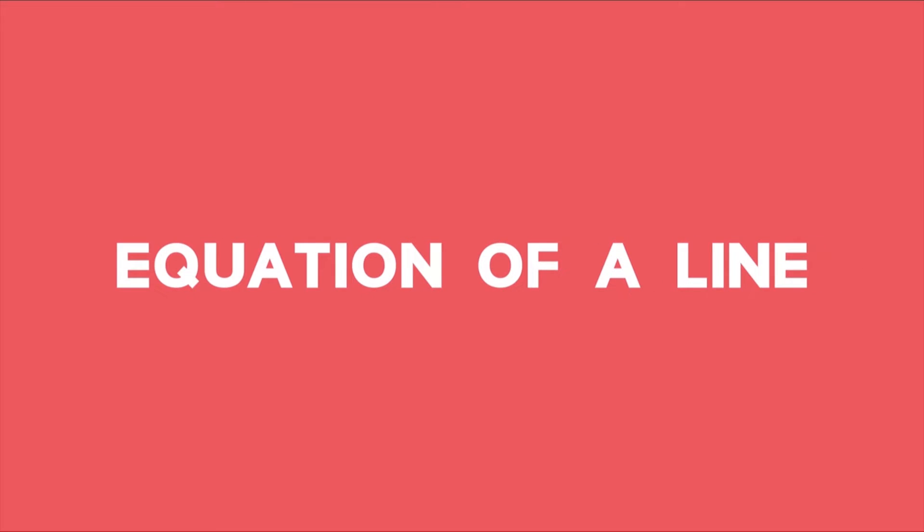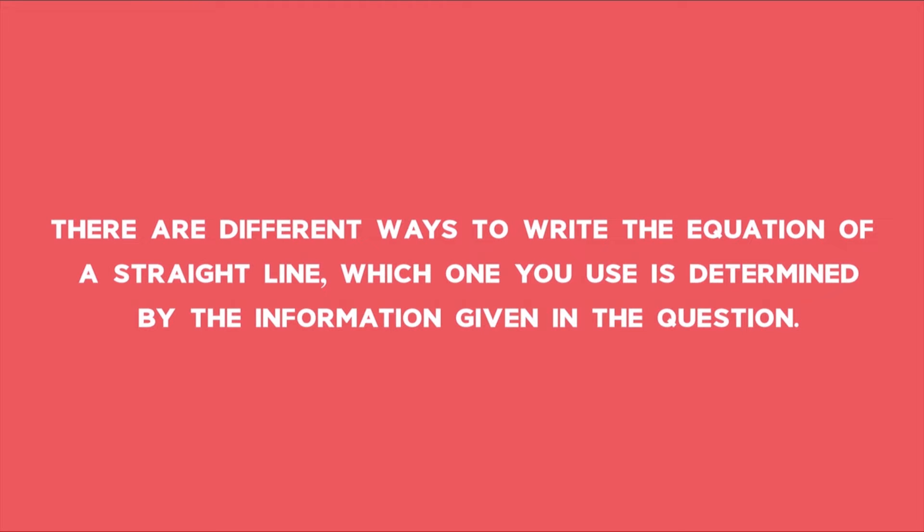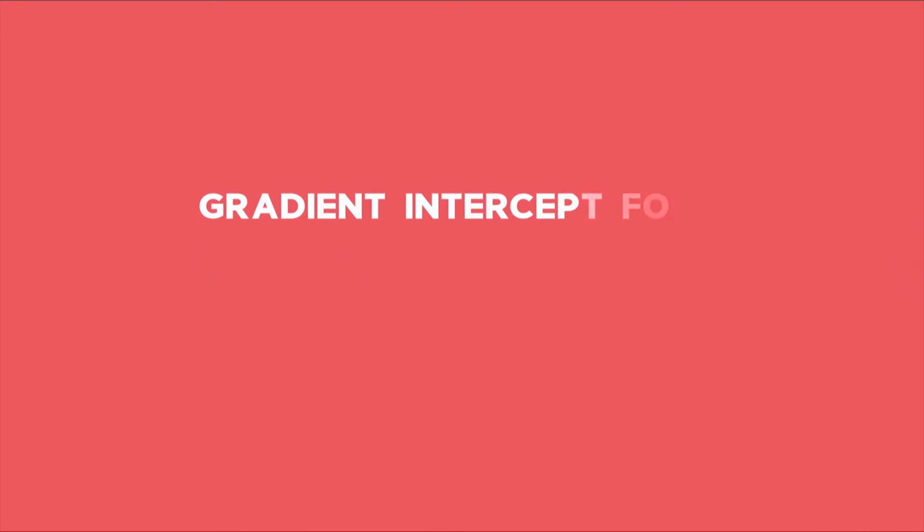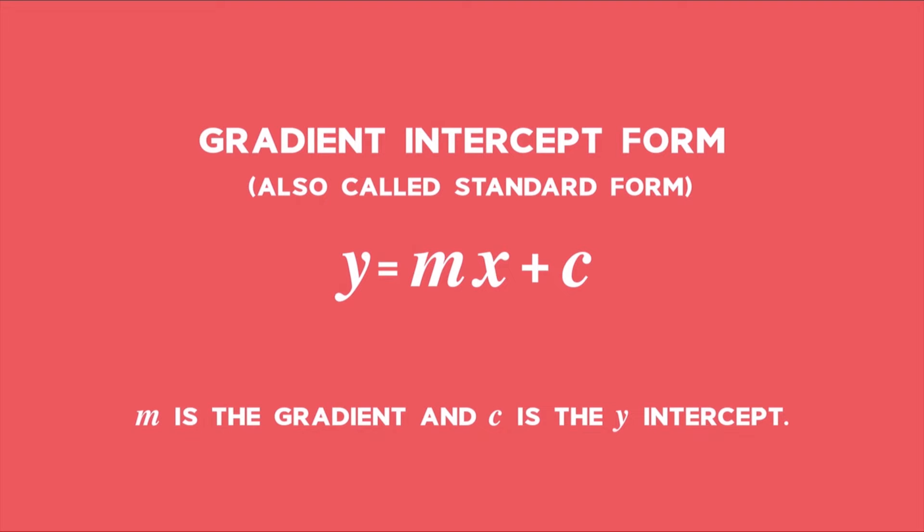The equation of a straight line. There are different ways to write the equation of a straight line. Which one you use is determined by the information given in the question. The first one is the gradient intercept form, also called the standard form of a straight line: y equals mx plus c. m is the gradient and c is the y-intercept.